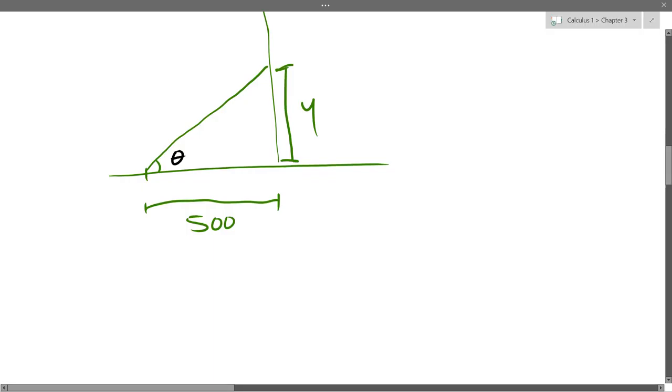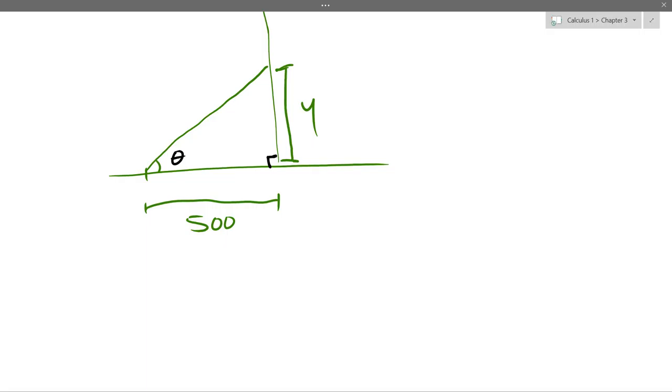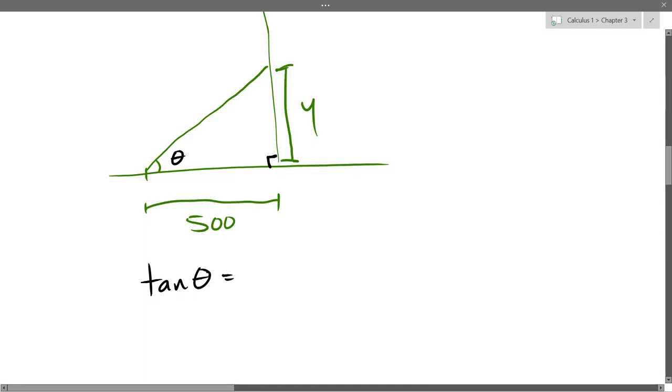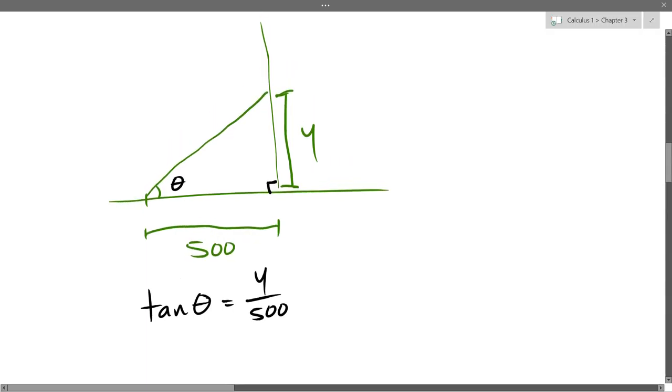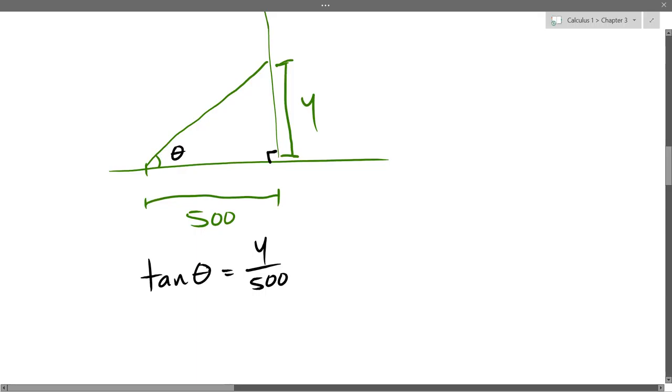All right, how do I relate these three quantities together? There's a tangent. Trigonometry - we got a right angle, a right triangle here. We got adjacent opposite, so that's tangent. So we got tan theta equals opposite over adjacent, Y over 500. I know the 500 is not changing, so I don't need a variable for that. So I have one equation that relates theta to Y. I only have two variables in one equation, so I'm ready at this point to take a derivative.